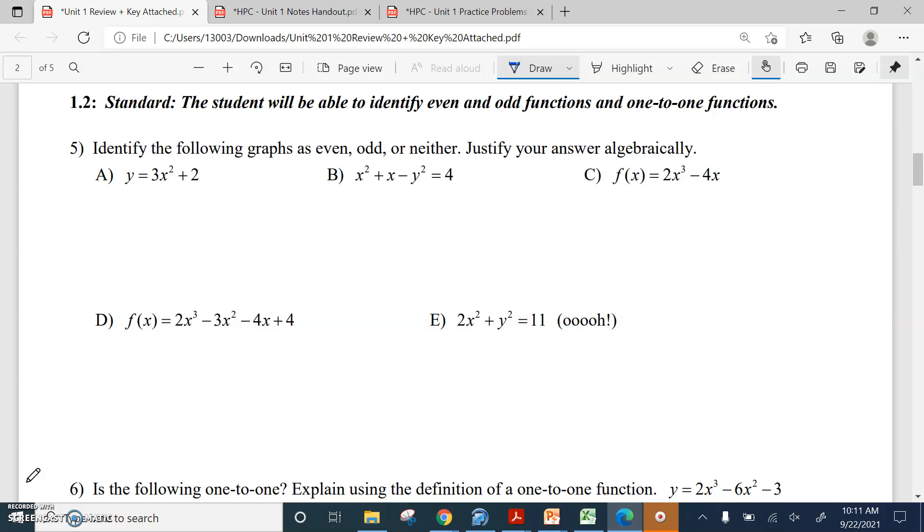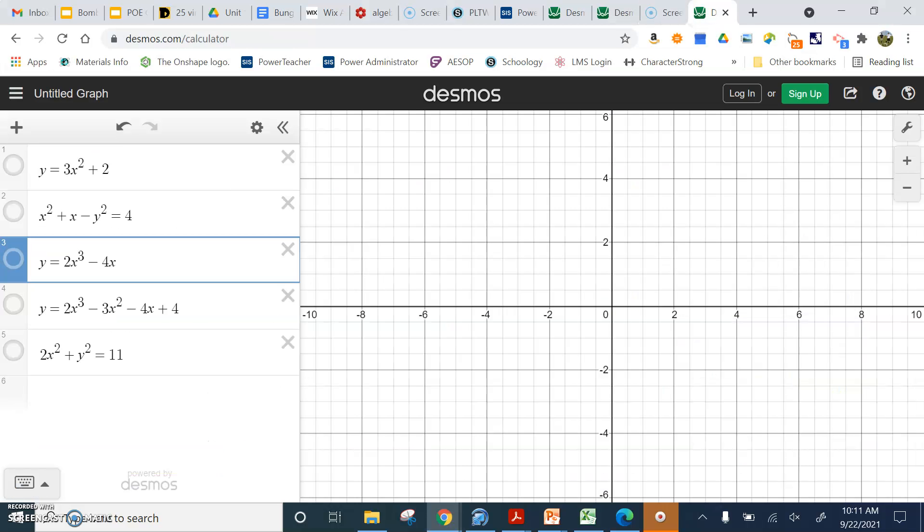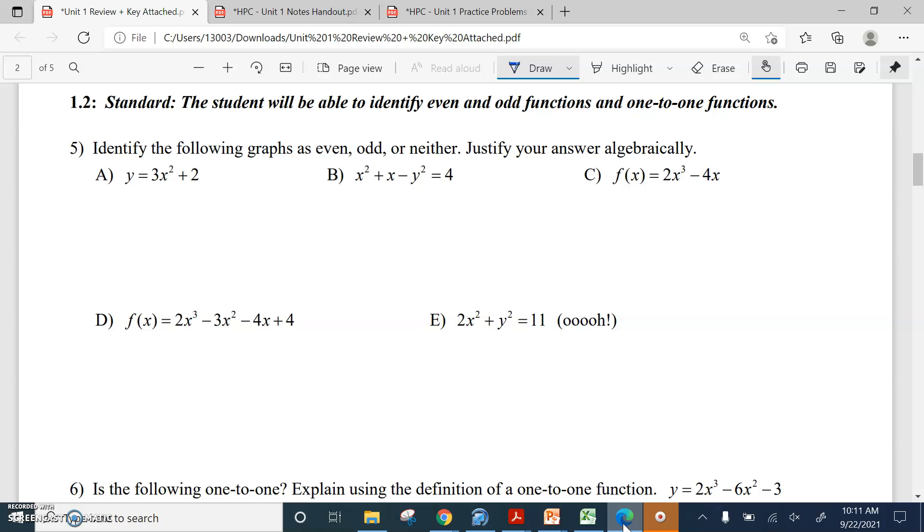So first thing first, 5A. Let's graph that. There's our screen recorder. There it is. 3x squared plus 2. Looking at that, that looks like an even function. Remember, even reflects across the y-axis. Evenly, there's that mirror image across the y-axis. So I'm going to say it's even just by looking at that. So I'm going to note even.